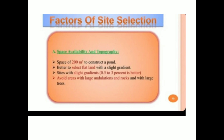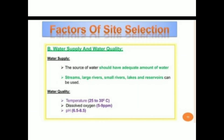The factors affecting site selection for pond construction: first is space availability and topography. A space of 200 square meters is needed to construct a pond. It is better to select flat land with a slight gradient of 0.5 to 3 percent, as the slope helps drain water during harvesting. Avoid areas with large undulations, rocks, and large trees, which can damage dikes and cause water runoff.